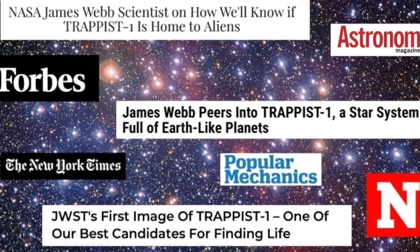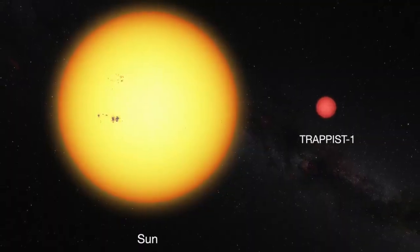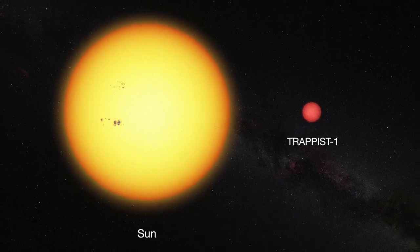TRAPPIST-1 is an M-type star. This means it's smaller, redder, and much cooler than our Sun.